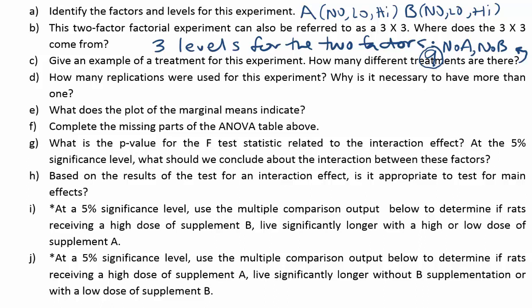Let's look at D. How many replications were used for this experiment? Why is it necessary to have more than one? If you remember when we read this, it said there were 36 rats being divided up into the different treatments equally. Since we just said there were nine treatments, that would have to be four replications. In other words, there should be four measurements for every treatment. So four reps. But why is it necessary to have more than one? That's where our error comes in for our experiment. We would have no sum of square for error without those replications.